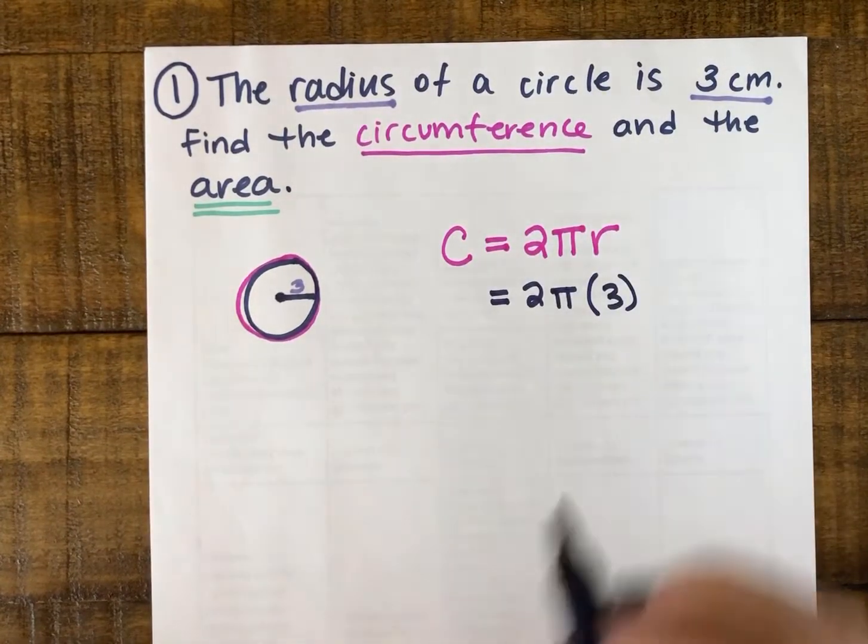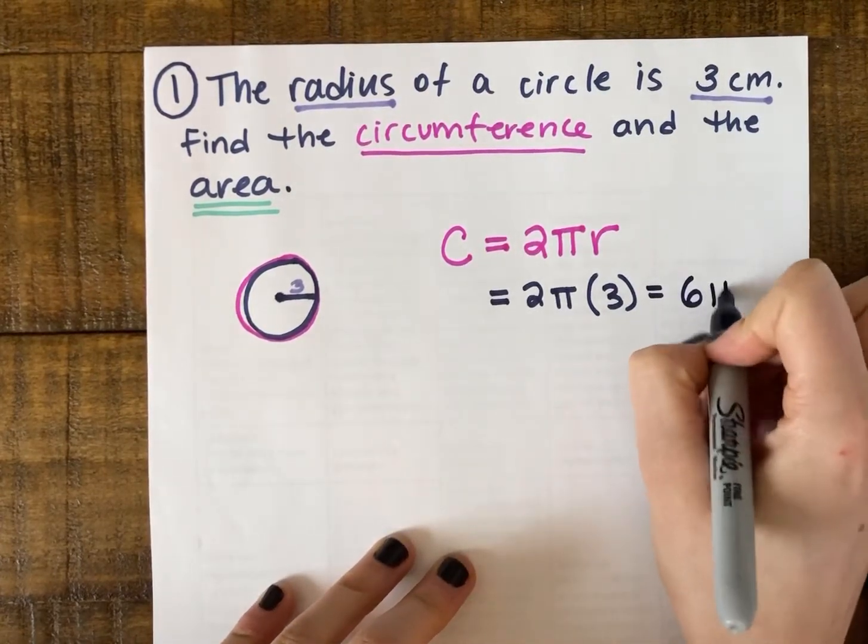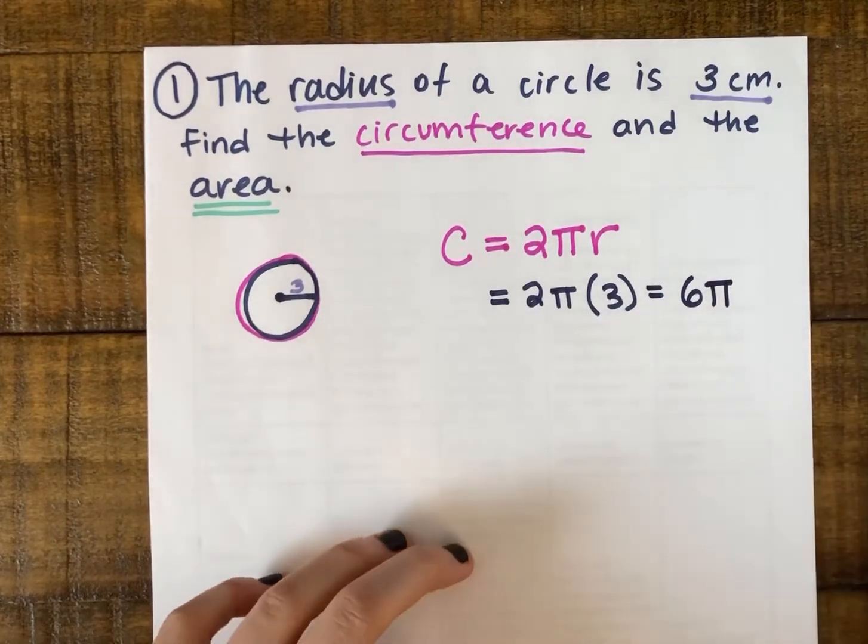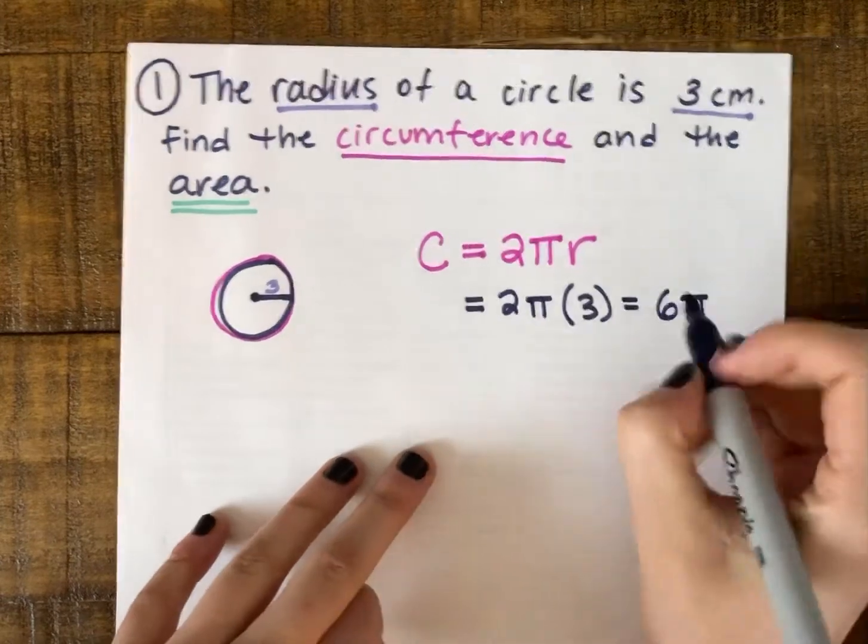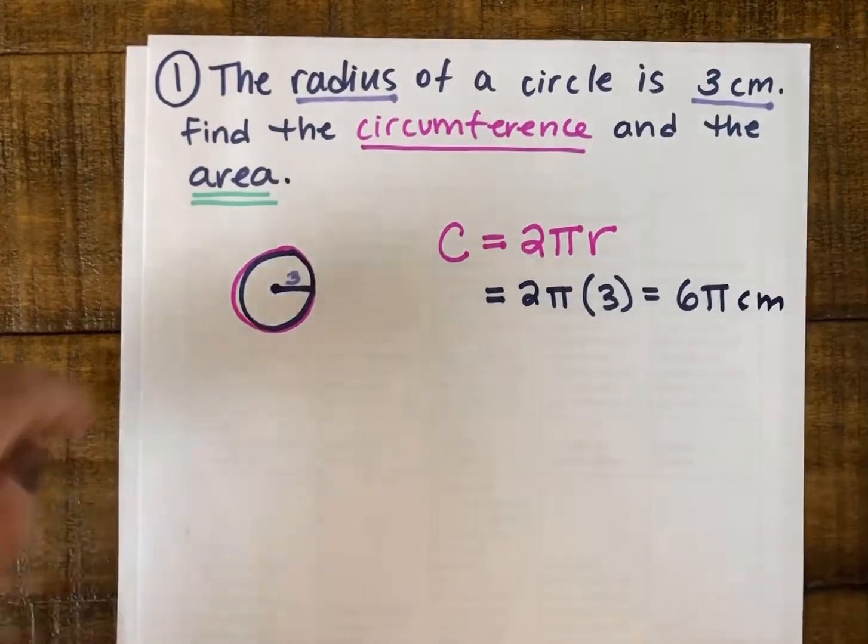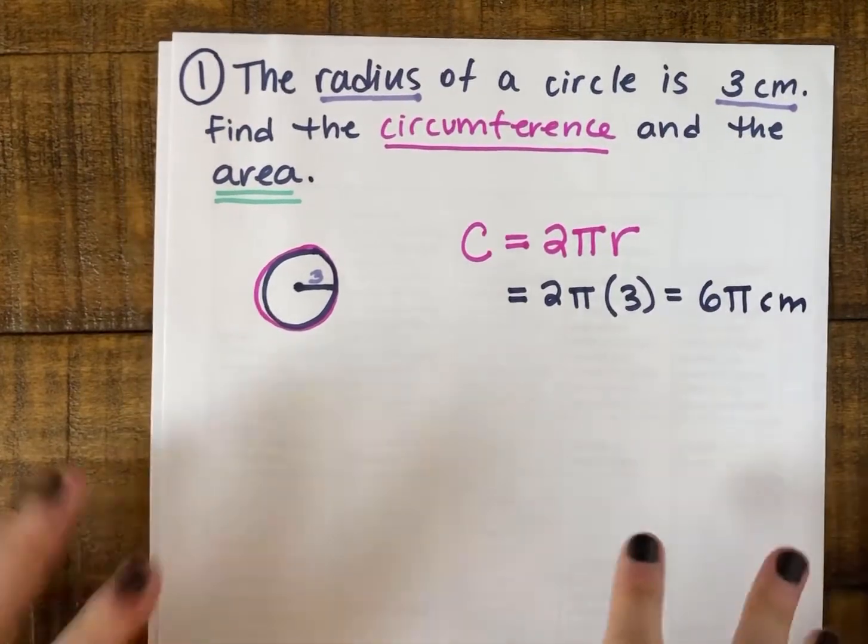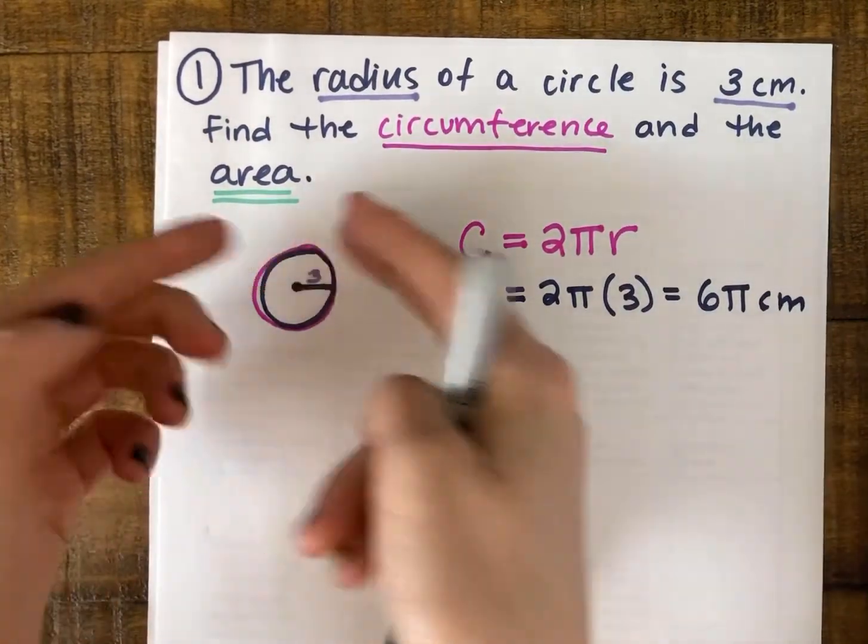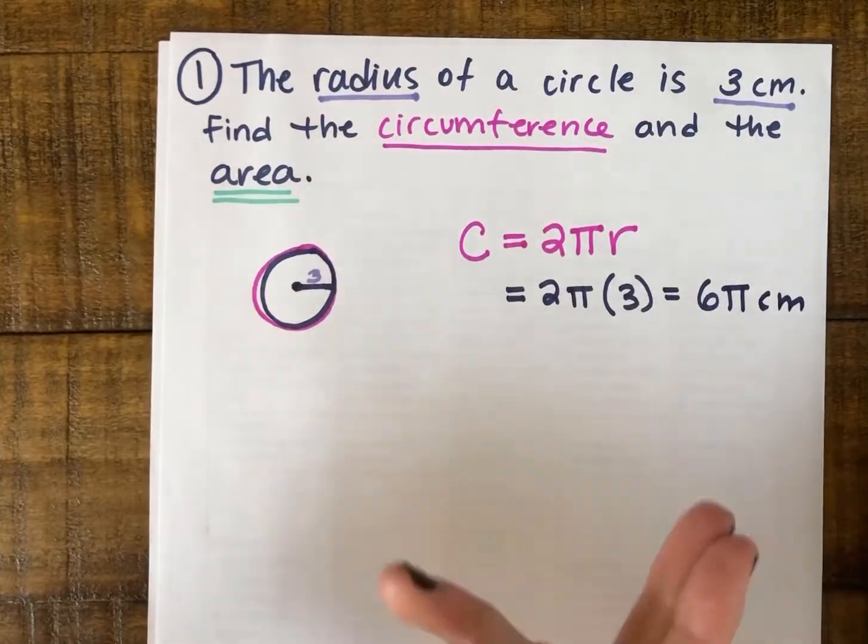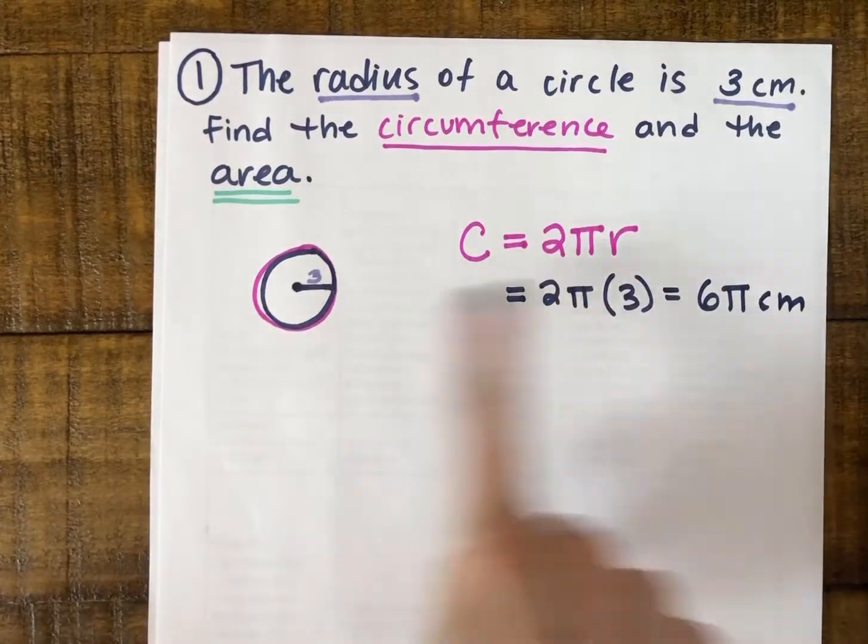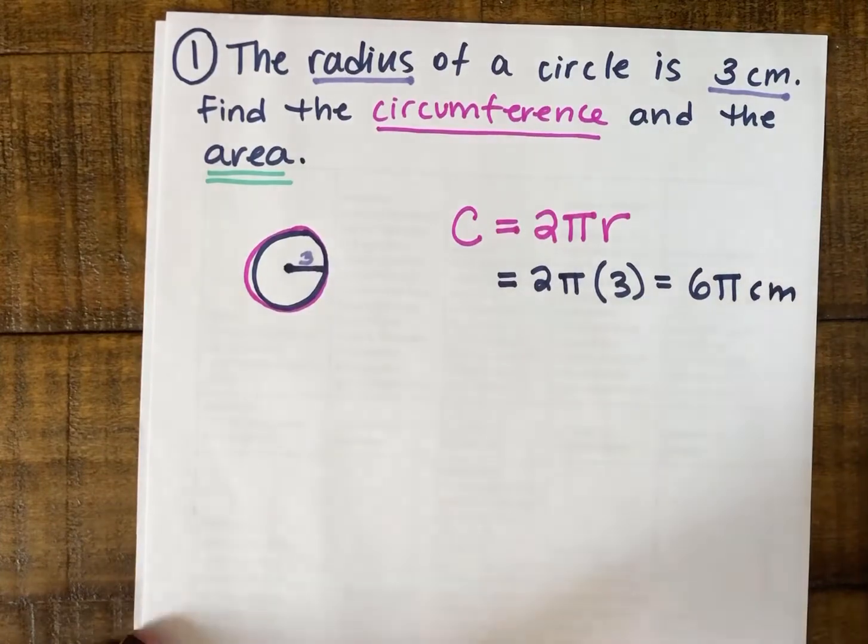I can simplify that expression to 6π, multiplying the 2 and the 3, and then writing in my unit of centimeters. Circumference, like we saw last week, can be measured against the ruler if you think about it as unraveling. You can turn that into a straight line if you cut it and unraveled it like we did with the string. So I would keep my measure of centimeters because that's a distance of the length around.